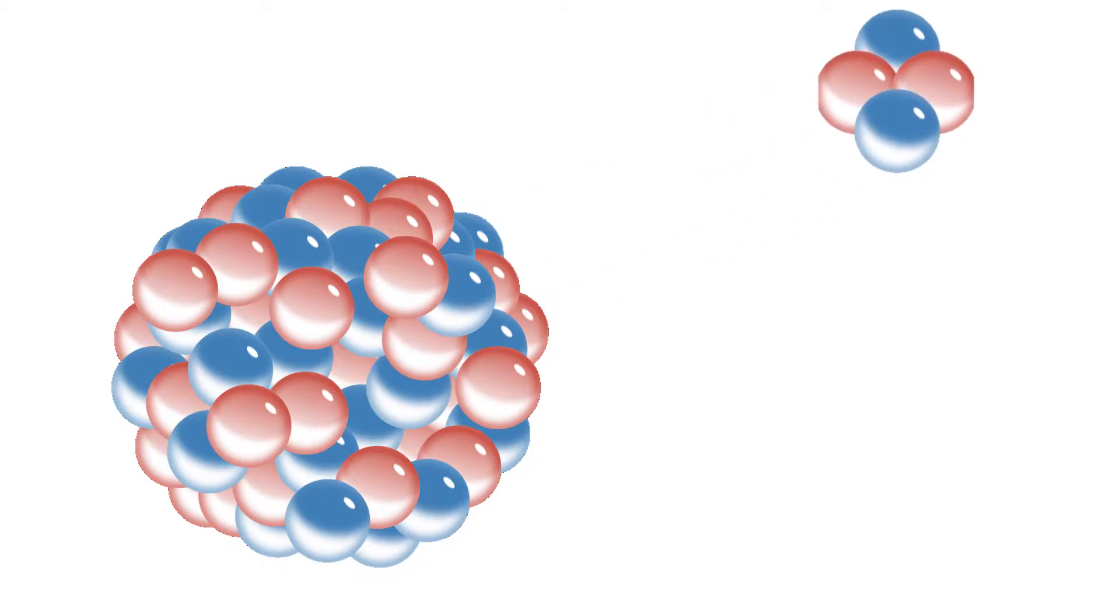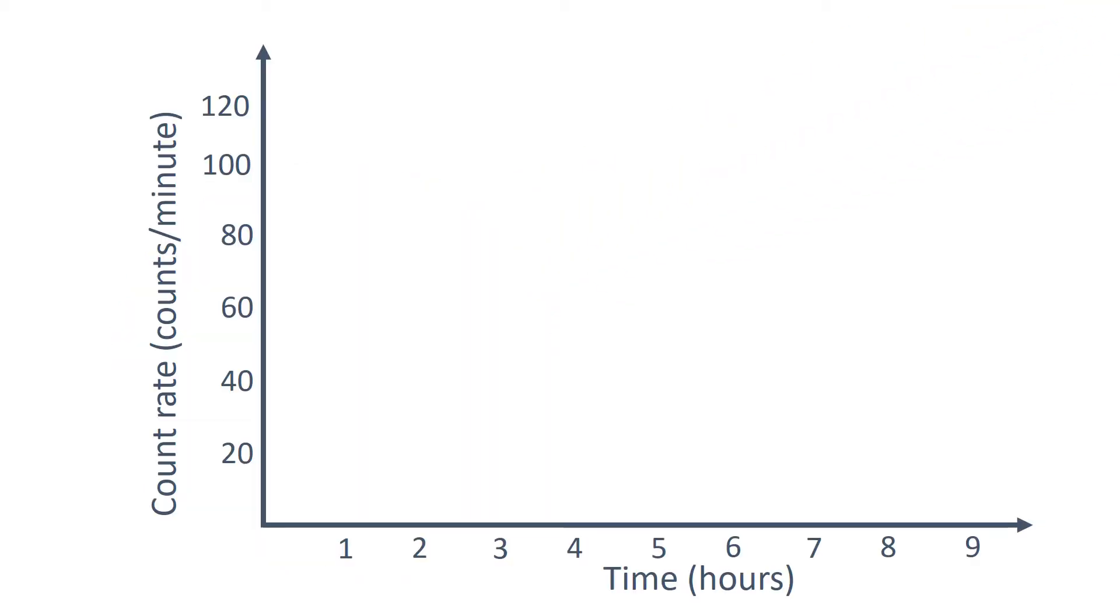Radioactive decay is random. The half-life of a radioactive isotope is the time that it takes for the number of nuclei of the isotope in a sample to halve, or the time it takes for the count rate or the activity from a sample containing the isotope to fall to half its initial level.